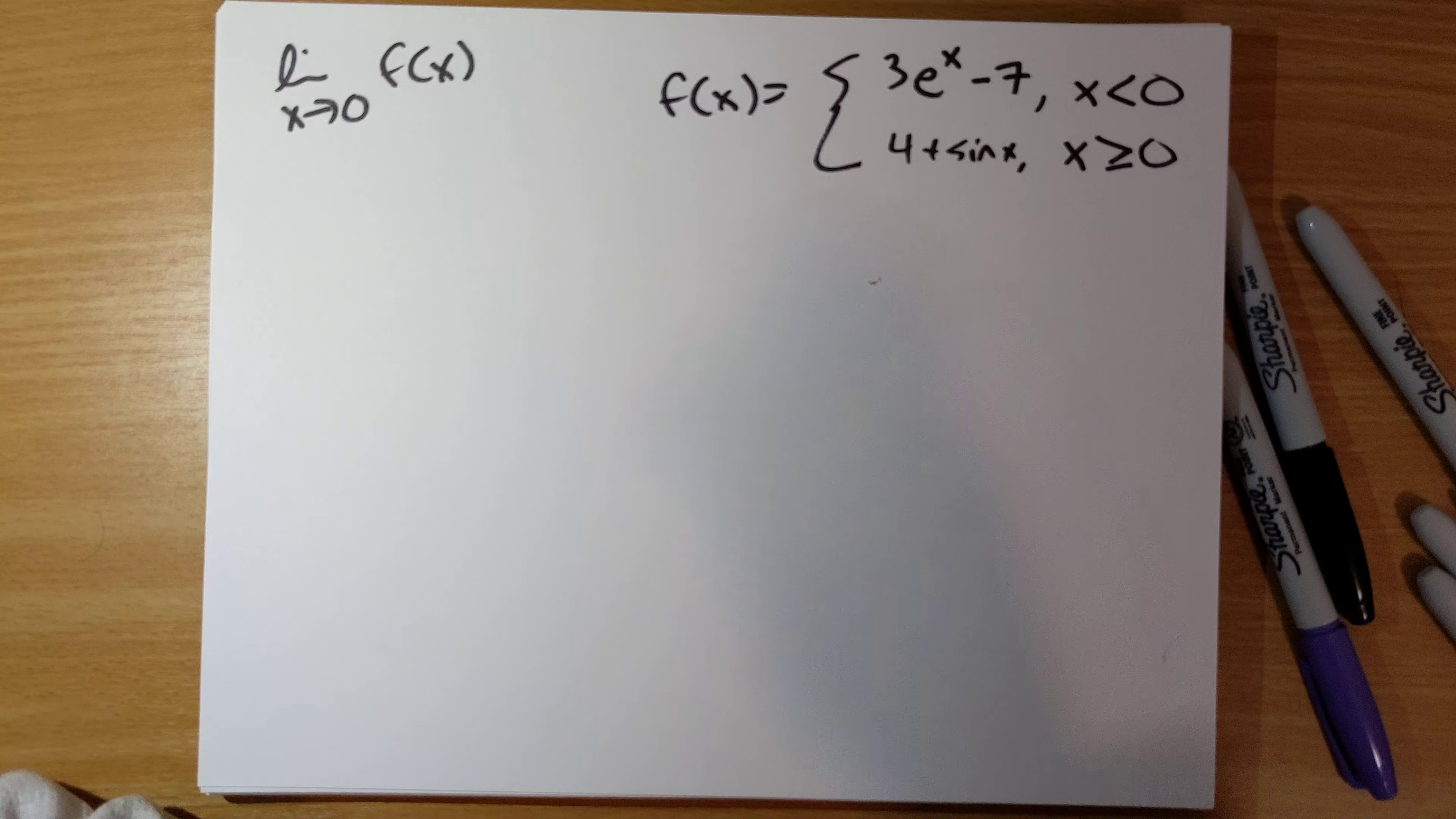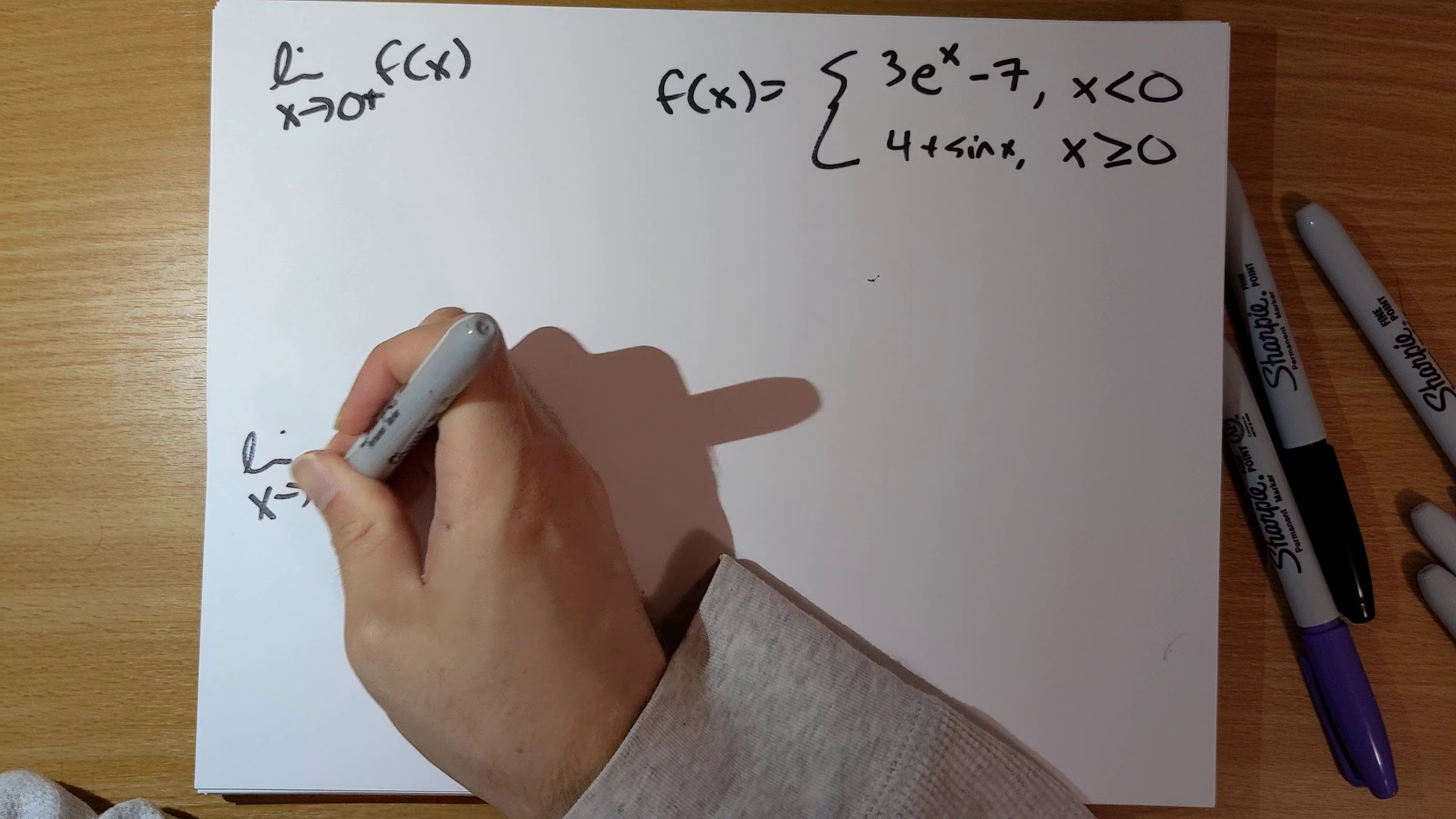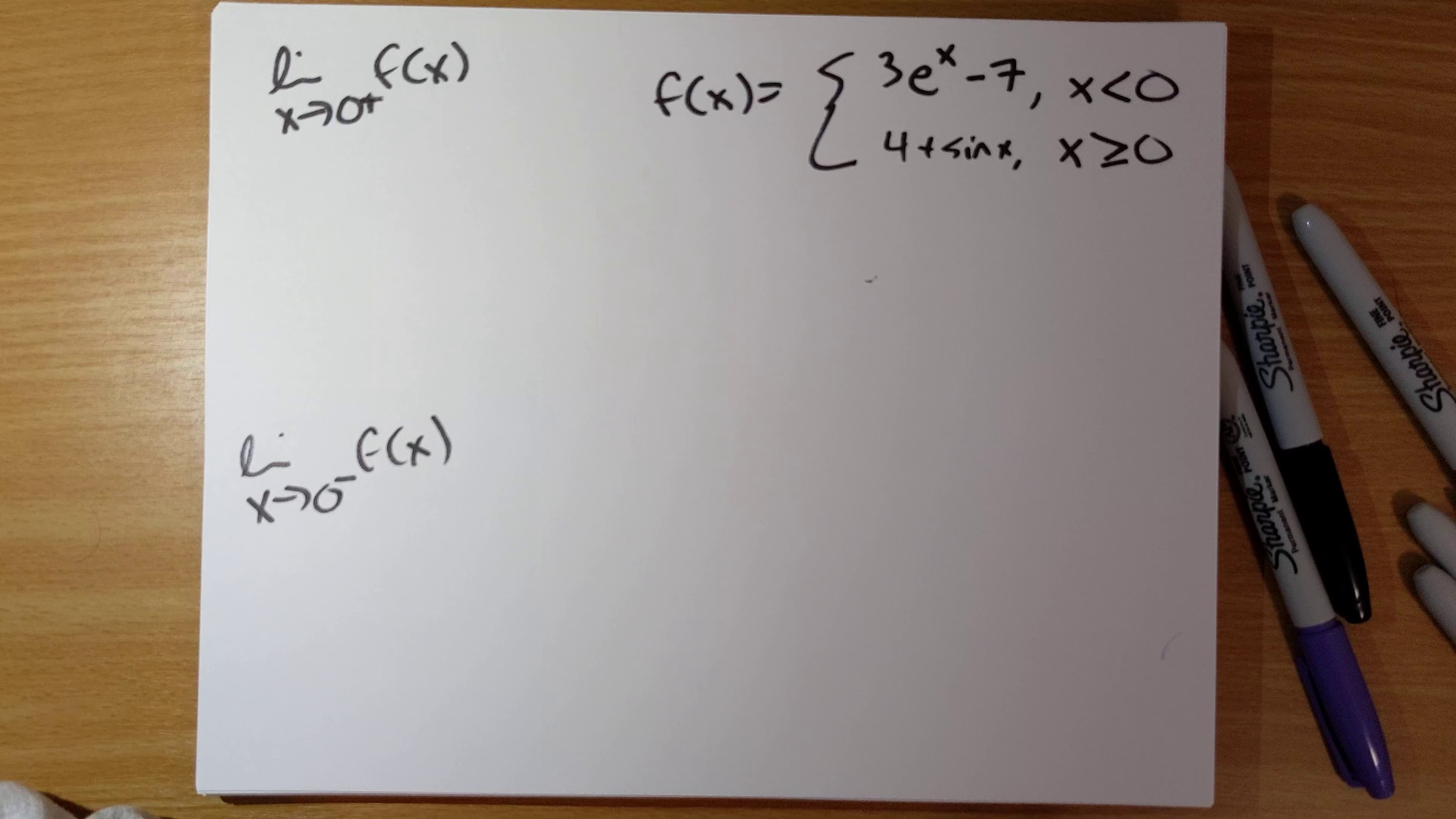So essentially what this means is that we need to compute the two one-sided limits. So we need to compute the limit as x goes to 0 from the right, and the limit as x goes to 0 from the left. And if these two one-sided limits agree, then the overall function limit exists.